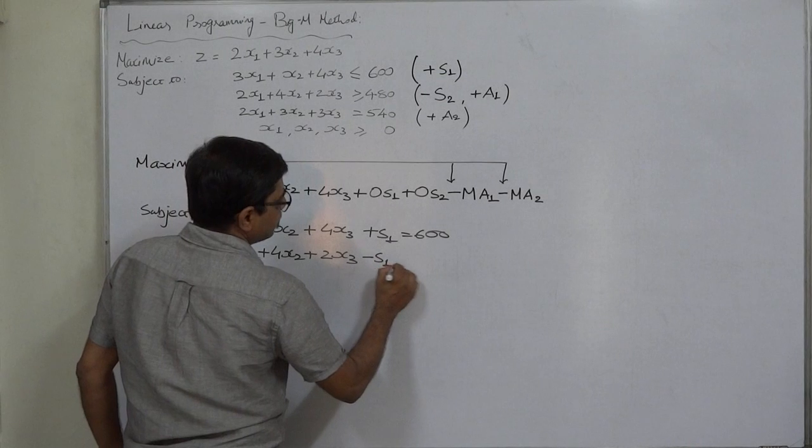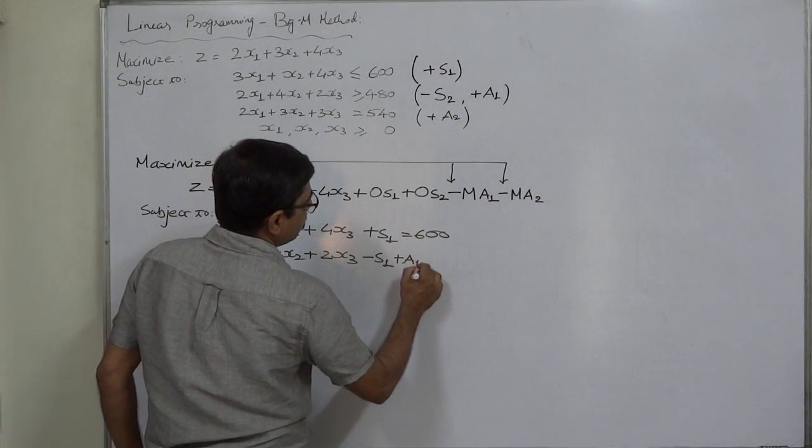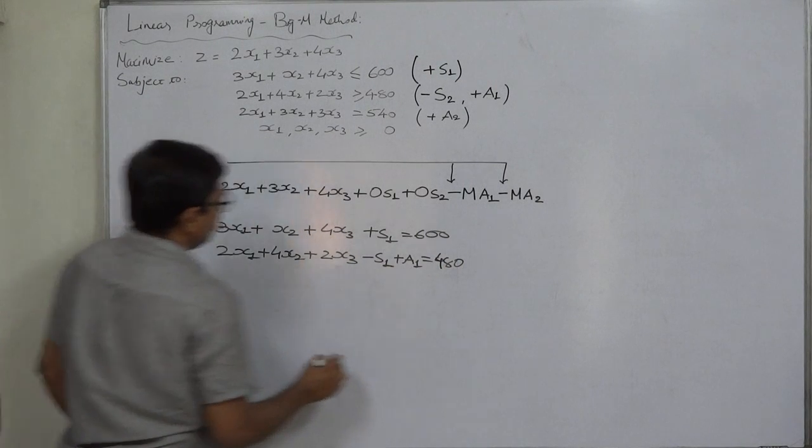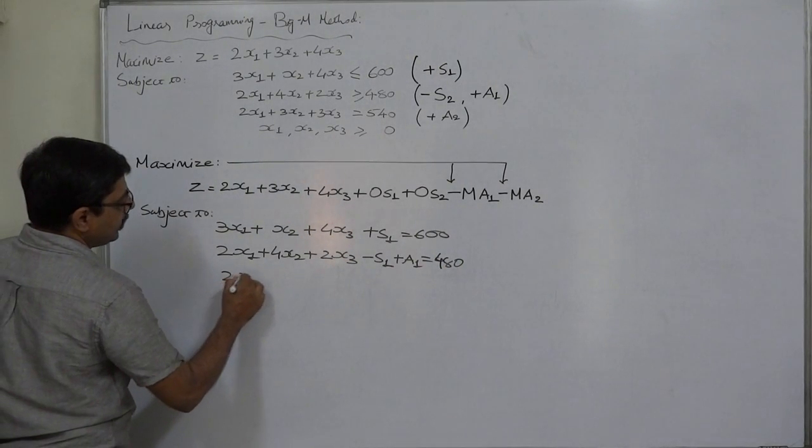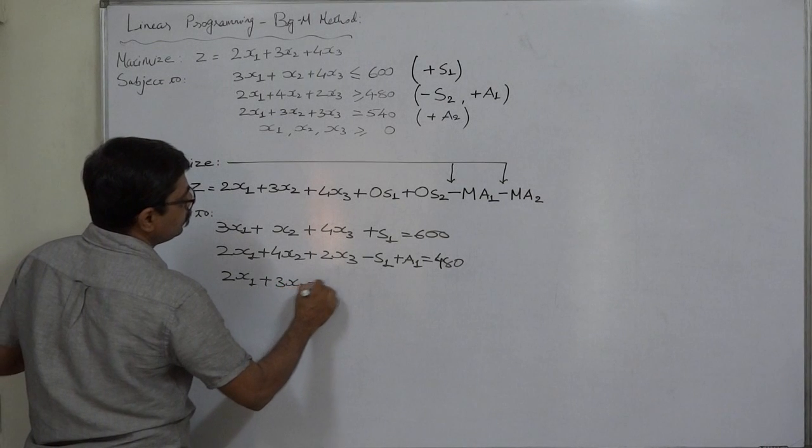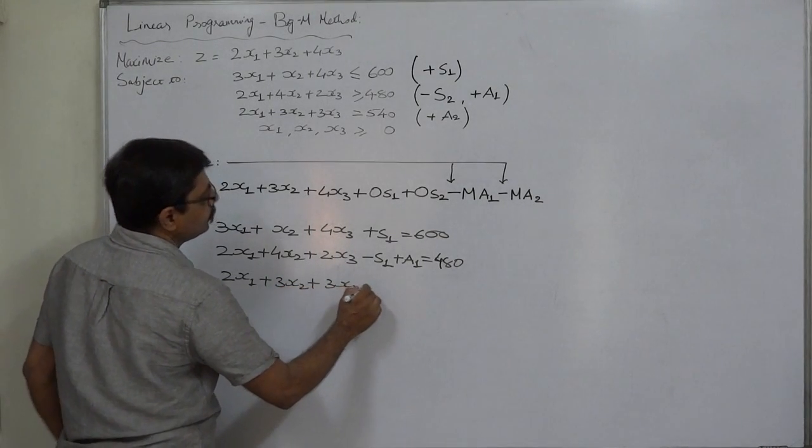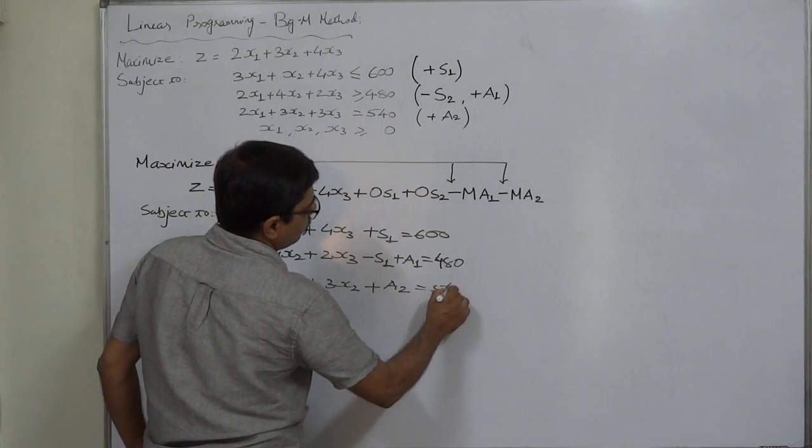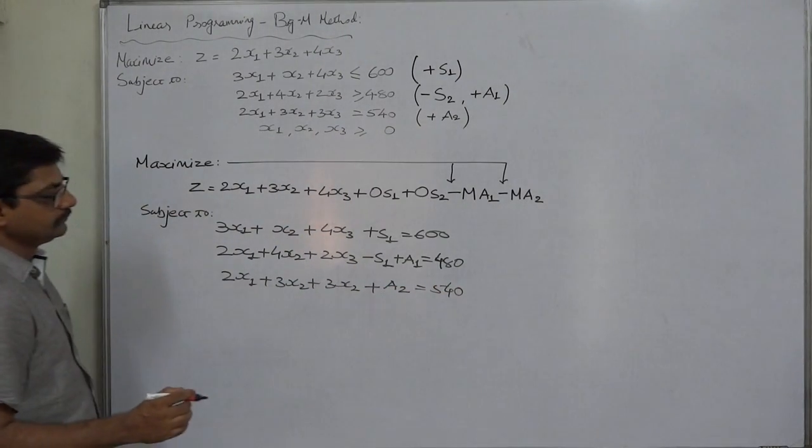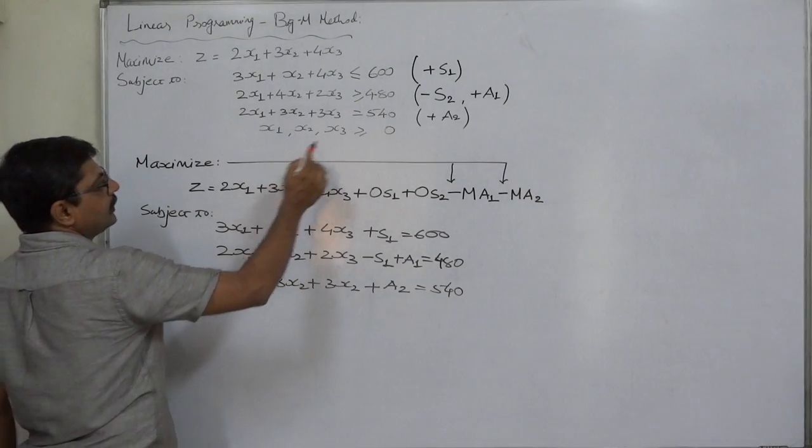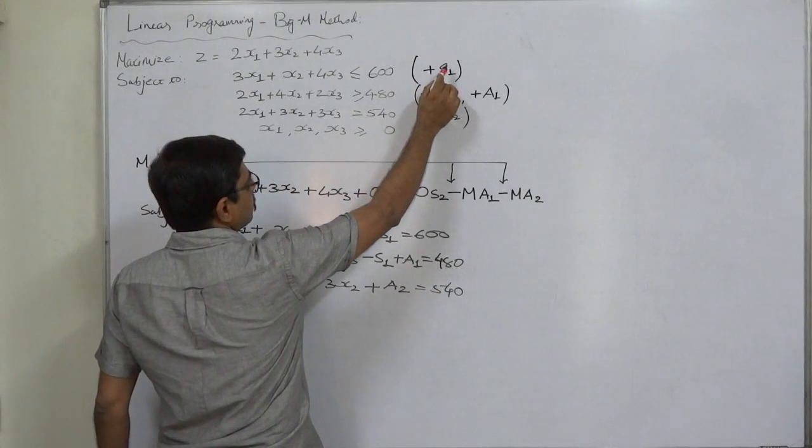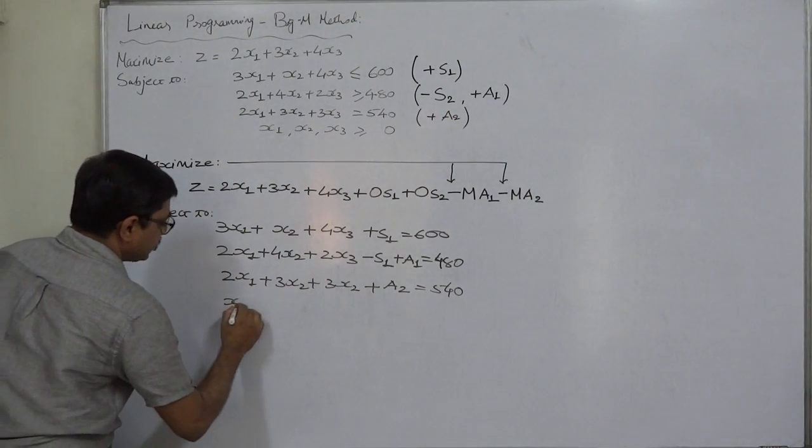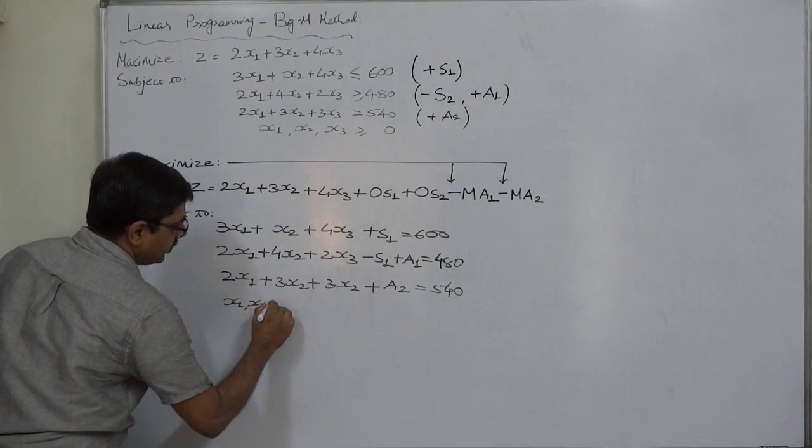The third will be 2x1 plus 3x2 plus 3x3 plus A2 equals 540. And we have now seven variables: x1, x2, x3, S1, S2, A1, and A2.